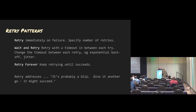These are some ways you can combine the patterns: retry immediately on failure a number of times; wait and retry — a retry with a timeout in between each. You can either keep the timeout constant or change it between each retry, like an exponential backoff. The first one waits 30 seconds, the next 60, the next 90, or exponentially. And retry forever keeps retrying until it succeeds. These are all your options with retrying — maybe it's a blip, maybe it'll clear itself up.